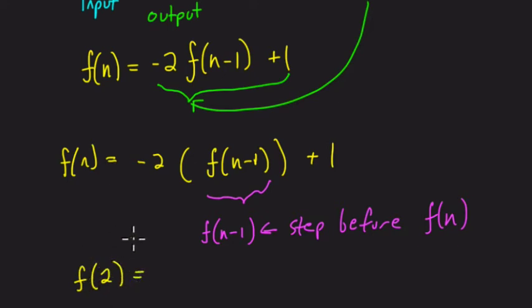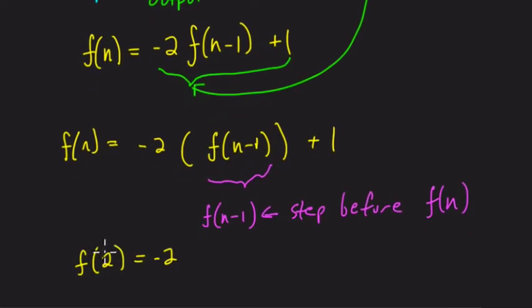So if you want to know what f of 2 is, you have to take negative 2, multiply it by f of n minus 1, that what happened in the step before f of 2, or f of 2 minus 1, we'll put that in, and then add 1 to it.